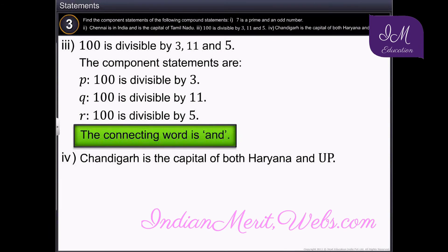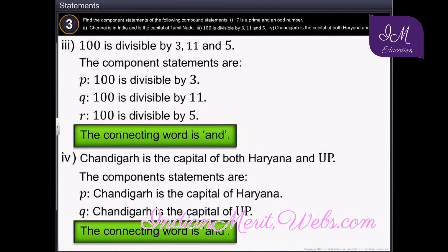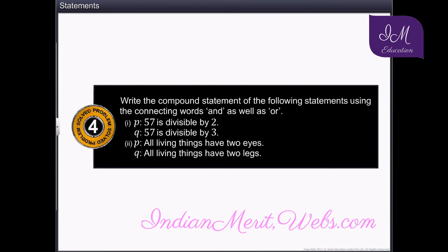The last statement is: Chandigarh is the capital of both Haryana and UP. The component statements are: Chandigarh is the capital of Haryana, and Chandigarh is the capital of Uttar Pradesh. Here the connecting word is 'and'. Write the compound statement of the given component statements using the connecting words 'and' as well as 'or'.